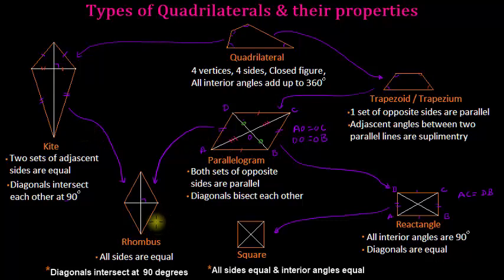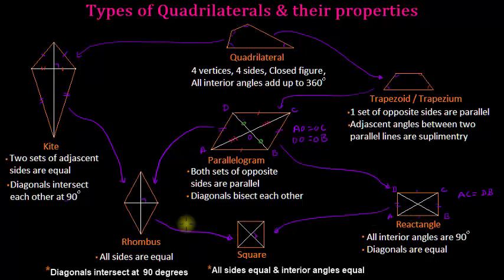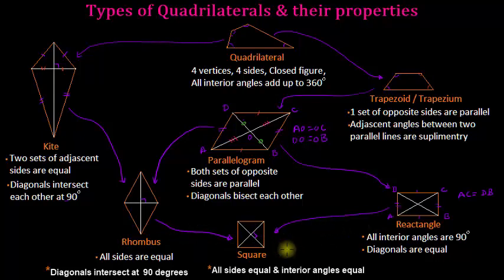If we make all interior angles of the rhombus equal to 90 degrees, we get a square. The square's diagonals intersect at 90 degrees, a property inherited from the rhombus — which is not true for a rectangle. So a square is a special case of both the rhombus and the rectangle. That's all for this video — keep watching MathSmart, bye-bye!